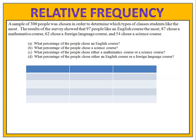In our first exercise today, we have a sample of 300 people that was chosen, and we asked what kind of classes were their favorites. The results showed that 97 people liked English, 87 chose a math course, 62 chose a foreign language, and 54 chose a science course. There's a series of questions that we want to answer.